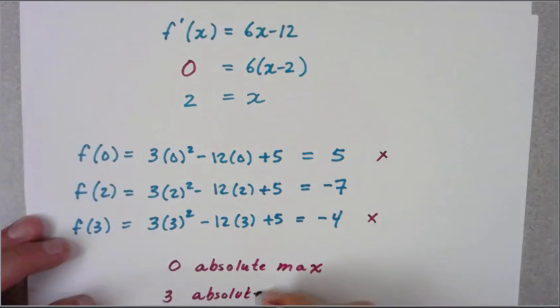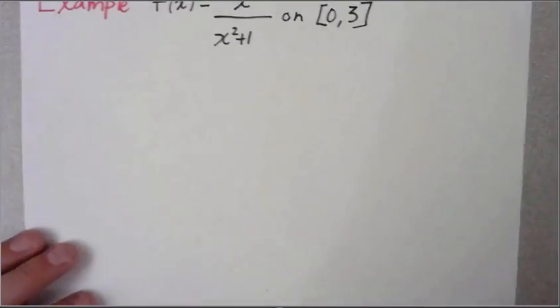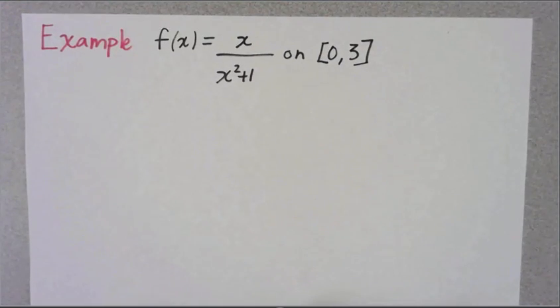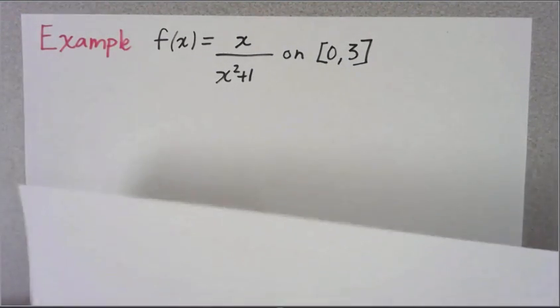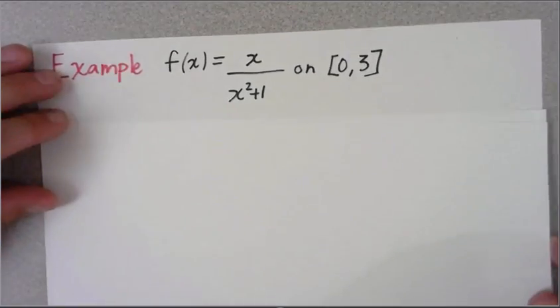That's what it means to use the closed interval test on a function. Let's look at one more example: f(x) = x/(x² + 1) on the interval from 0 to 3. You can do this a couple ways.